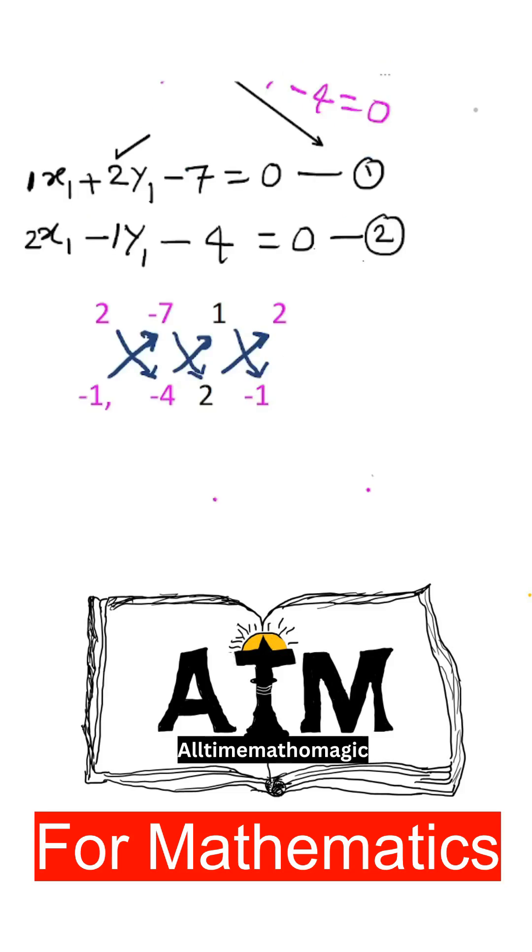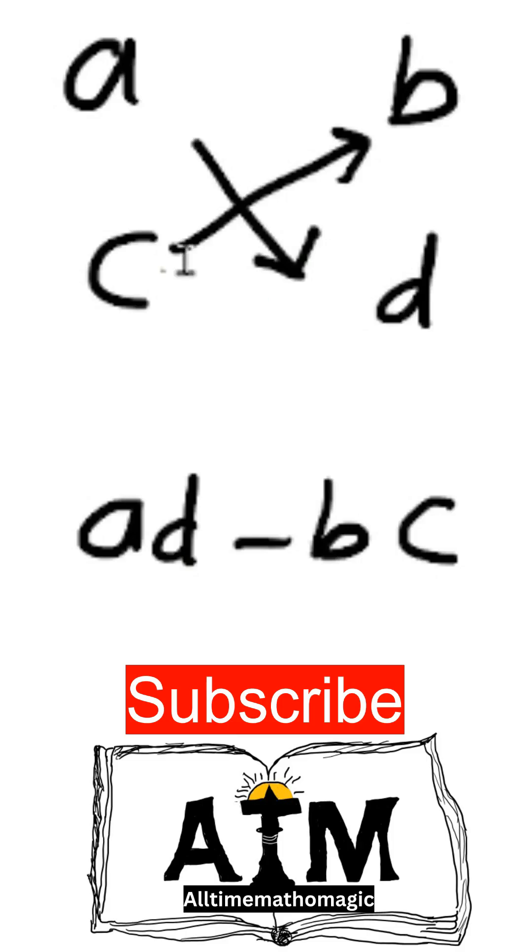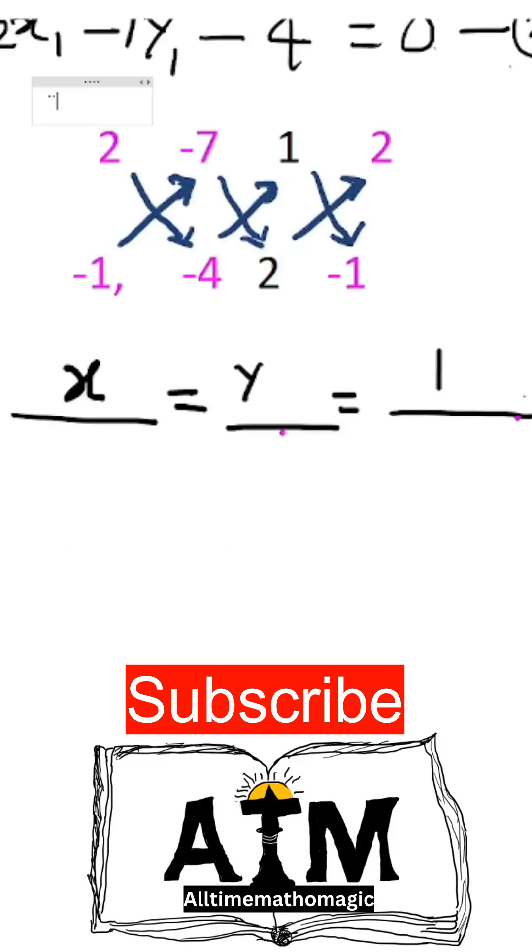Then write down X divided by, equals to Y divided by, equals to 1 divided by. Then you select these four numbers. Suppose these four numbers are A, B, C, D written in this order, then find the value of AD minus BC.